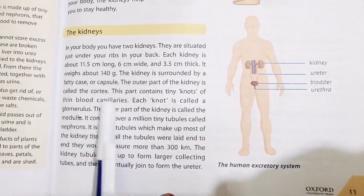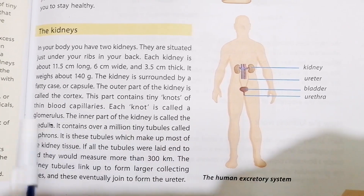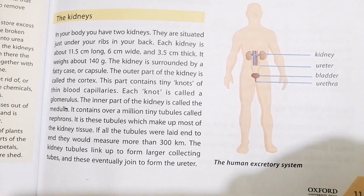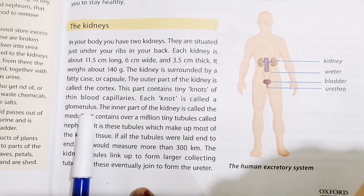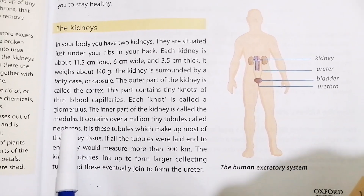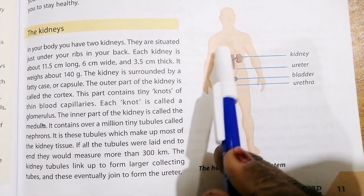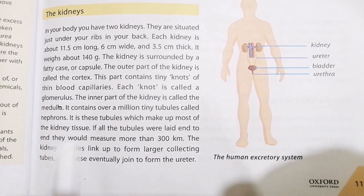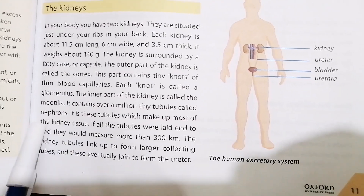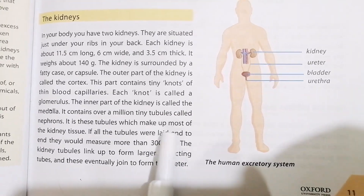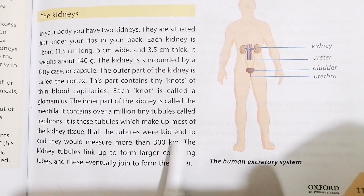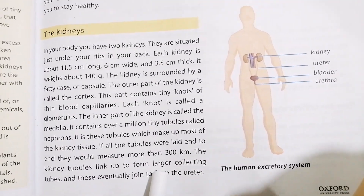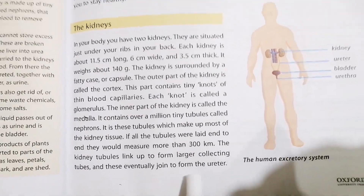We can see in the picture the position of the kidney and its parts. The parts contain tiny knots of thin blood capillaries. The kidney contains a million tiny tubules called nephrons, which are small tubes making up most of the kidney tissue. If all the tubules were laid end to end, they would measure more than 300 kilometers. The kidney tubules link up to form large collecting tubes, which eventually join to form a ureter.